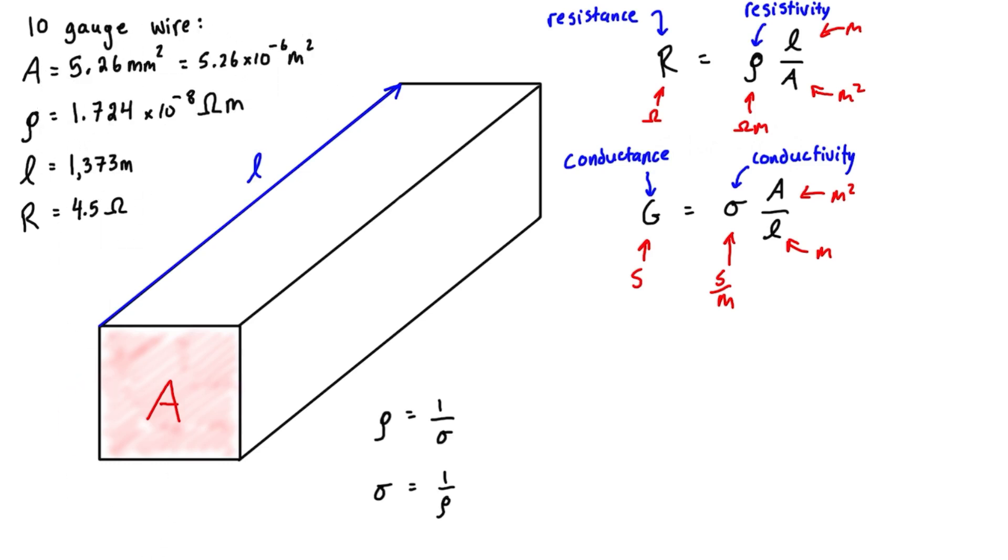We can find the overall conductance of this 1.3 kilometer wire by first converting our resistivity to conductivity.